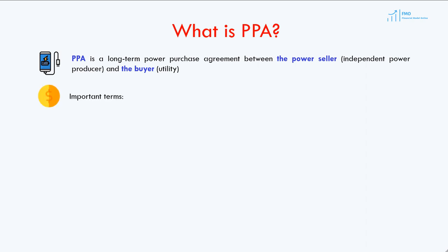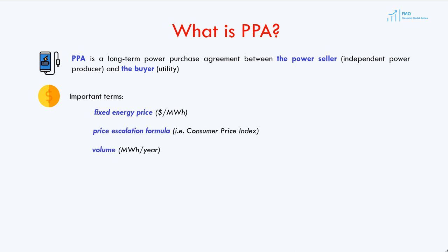The most important items of the PPA for renewable energy projects are: fixed energy price per megawatt hour delivered, price escalation formula, energy volume — in other words, how much megawatt hours we will sell per year — contract tenor, meaning the length of the contract, and delivery point, where the energy shall be delivered.